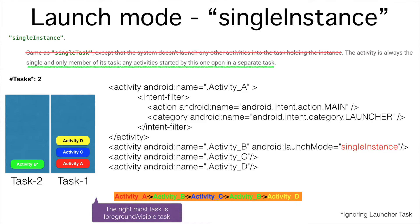After this, if I launch activity D, it will be put on top of activity C in task 1 and brought to the foreground. Now the question is: what if task B also had an affinity associated with it? Theoretically speaking, it wouldn't make any difference, but practically speaking there is one small difference between a single instance with task affinity and without task affinity. Rather than talking about it, I'll show you in a demo.